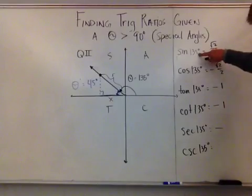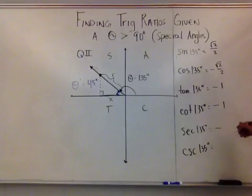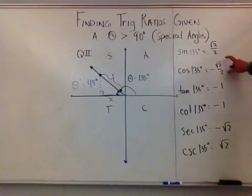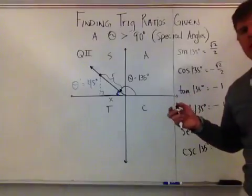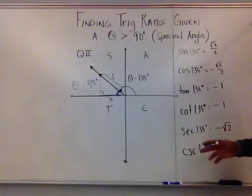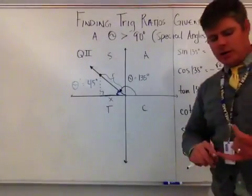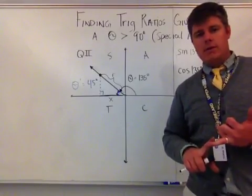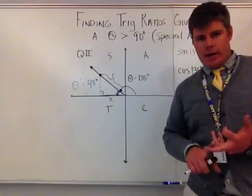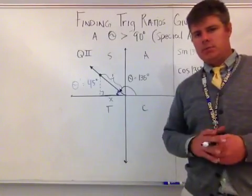Tangent of 135 is negative 1. Cotangent is sine divided by cosine: root 2 over 2 divided by negative root 2 over 2, which is negative 1. Secant is the reciprocal of cosine, which gives negative root 2. Cosecant is the reciprocal of sine: 2 over root 2 times root 2 over root 2 reduces to just root 2. The process is: make a drawing, find your quadrant, assign signs, find the reference angle, then find the trig ratio for that reference angle — they will be equivalent. Let's do one more.